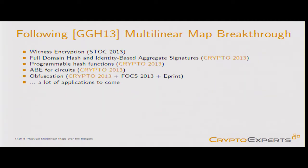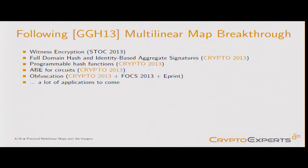Following this breakthrough, there is a bunch of work using these approximate multilinear maps: witness encryption earlier this year, a bunch of papers at Crypto, key homomorphic PRFs this morning, exciting results about obfuscation at Crypto and on ePrint, and certainly a lot of other applications to come.